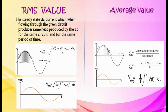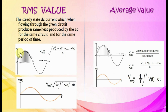RMS value is the steady-state DC current which, when flowing through a given circuit, produces the same heat as the AC for the same circuit and same period of time. V RMS equals root of (V1 squared plus V2 squared plus ... plus VN squared) by N, where V1, V2, V3 are instantaneous values of the waveform. Another equation: V RMS equals root of (1 by T) integral from 0 to T of V(t) squared dt.